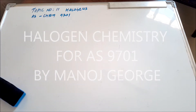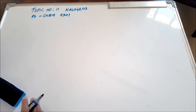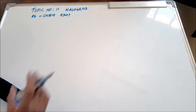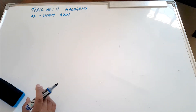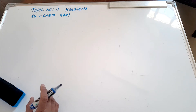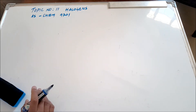Hi, I'm Mr. Manoj. This is a short presentation on the chemical properties and physical properties of halogens. This is customized for the AS syllabus 9701, but this could be used as general information across all different kinds of boards.